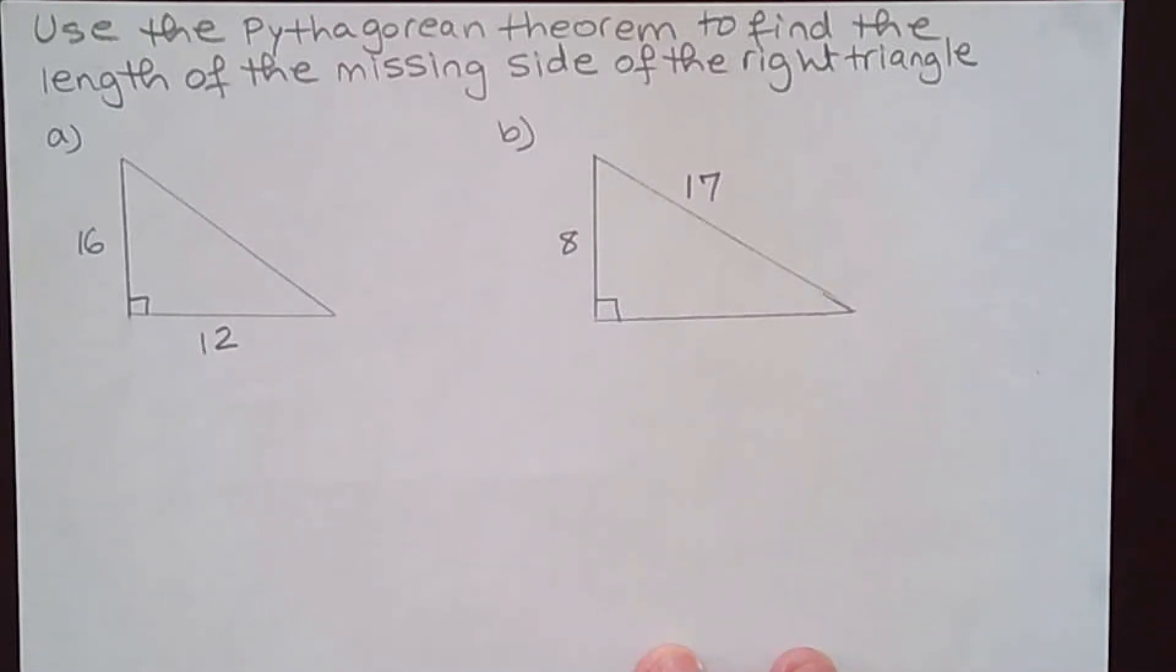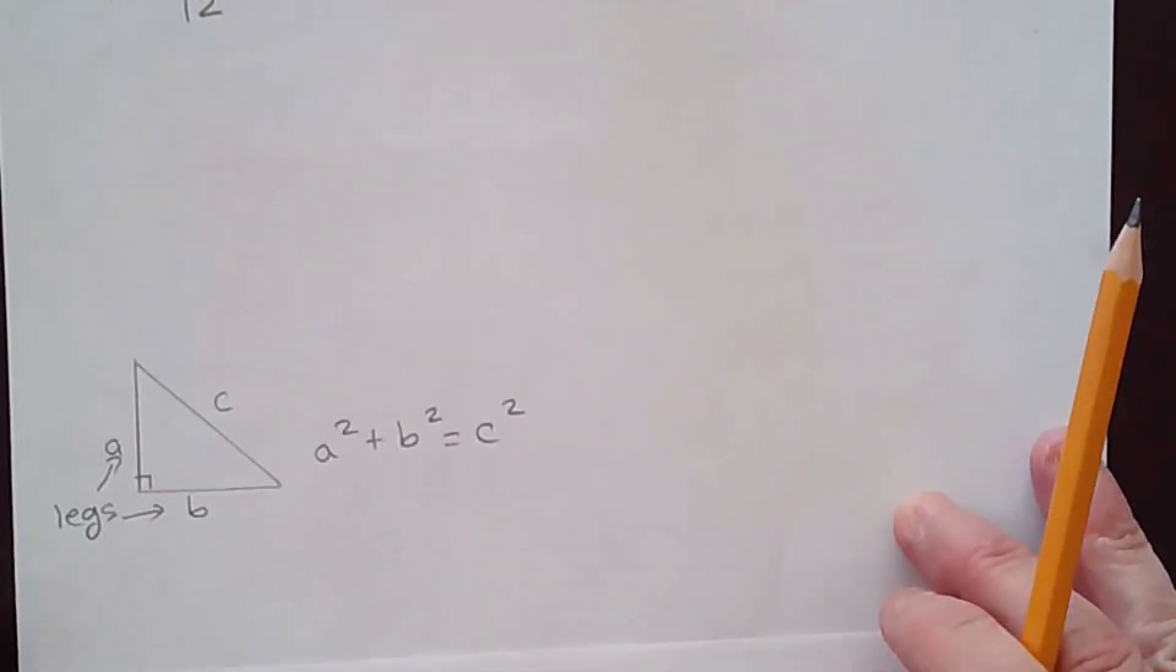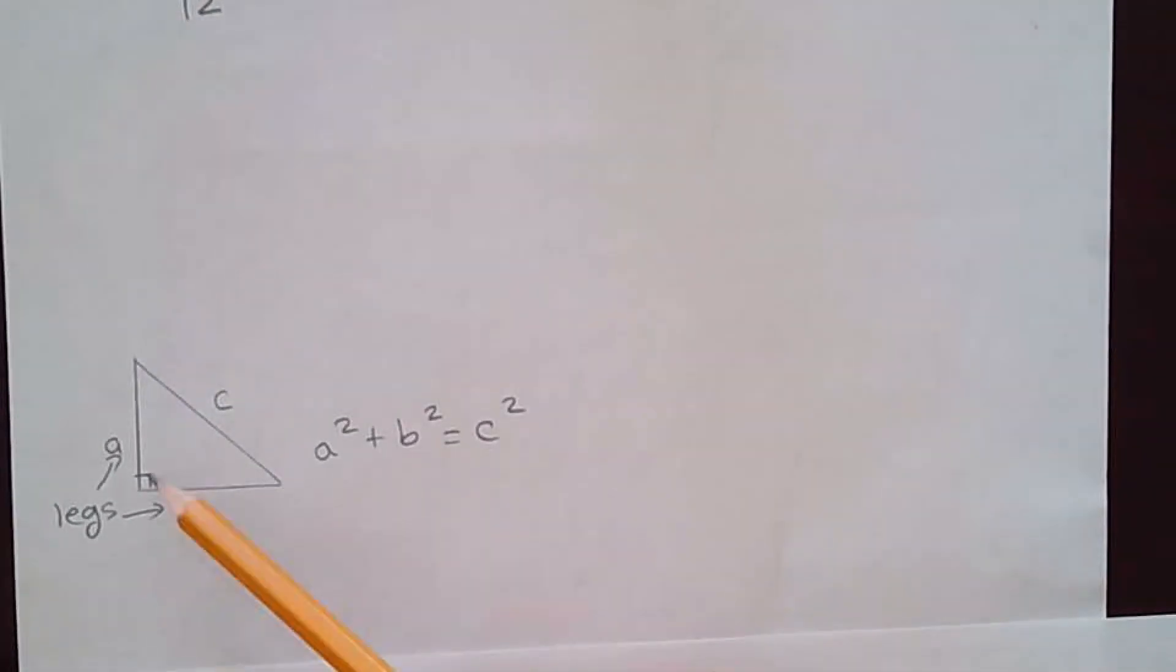Use the Pythagorean theorem to find the length of the missing side of the right triangle. We're going to be doing these two problems. You have right triangles in both cases and we can use the Pythagorean theorem.